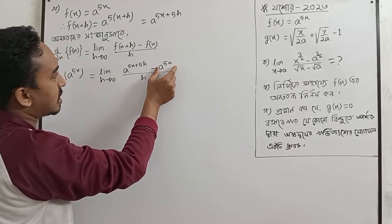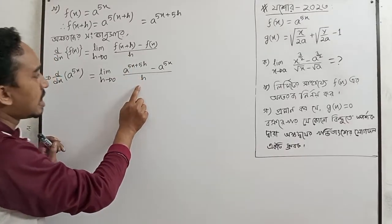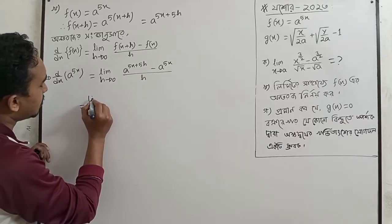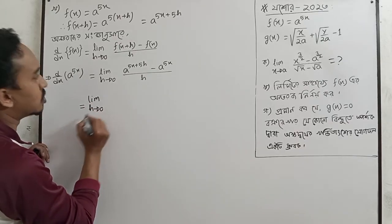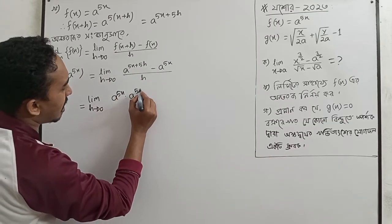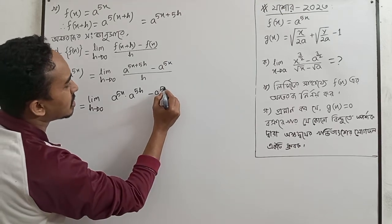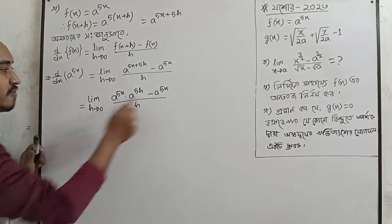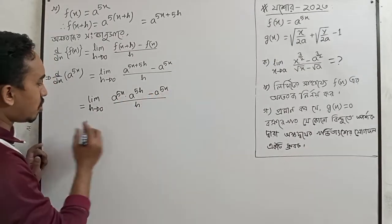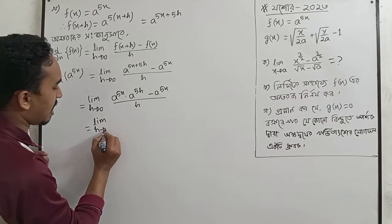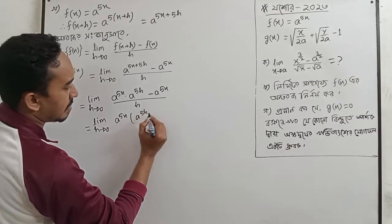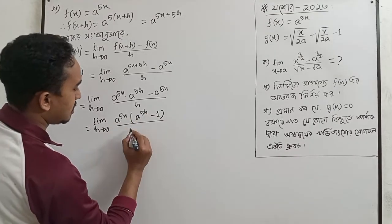f of x is a to the power 5x, so we substitute. This gives us limit h tends to 0 of a to the power 5x times a to the power 5h minus a to the power 5x divided by h. a to the power 5x is common, so we factor it out: a to the power 5x times a to the power 5h minus 1 divided by h.